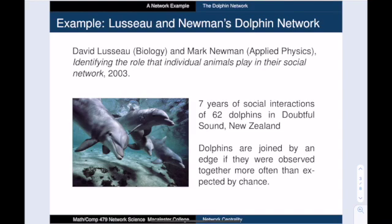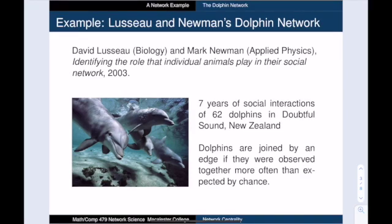So let's see what these centrality measures can tell us about the social dynamics of a group of dolphins living in Doubtful Sound, New Zealand. This network appears in a collaboration between David Lusso, a biologist, and Mark Newman, an applied physicist. Their data came from seven years of research observations, including a tally of which dolphins were spotted together. Lusso and Newman used this data to create a dolphin social network. They joined two dolphins by an edge if they were seen together more frequently than random chance would predict.